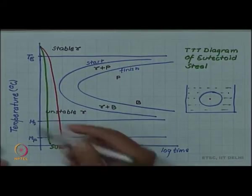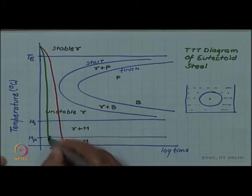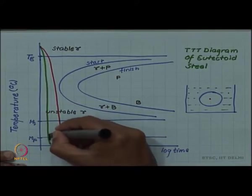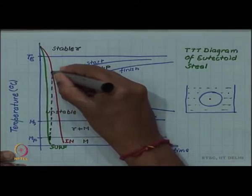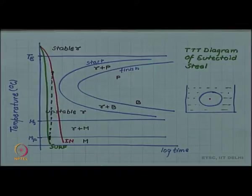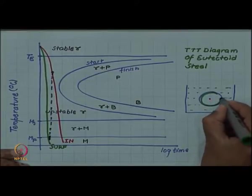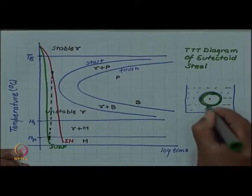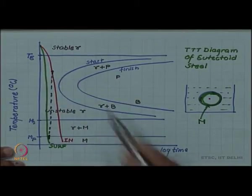Now you can see that when the surface crosses martensite start and martensite finish at this temperature at this time, at that time the inside is still warm. The surface has dropped below MF temperature and has formed martensite, but inside is still warm and is still austenite.